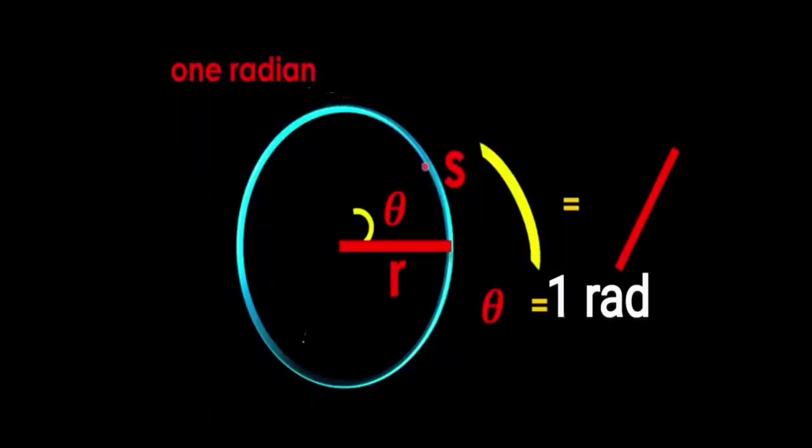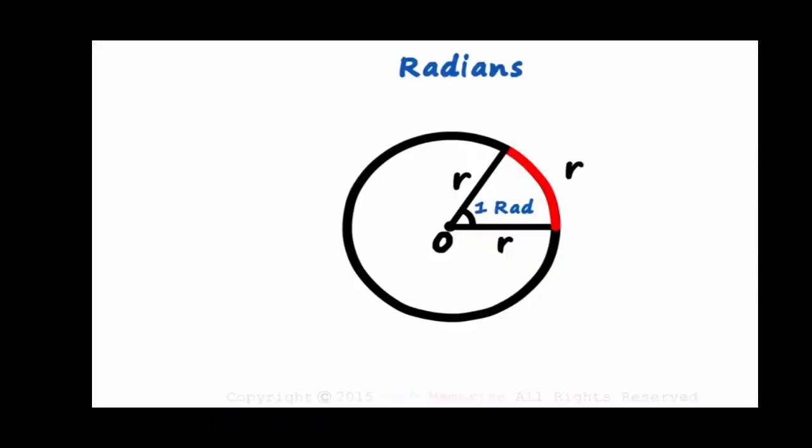You will get an angle equal to 1 radian. So 1 radian is the angle subtended at the center of a circle by an arc that is equal in length to the radius of the circle.